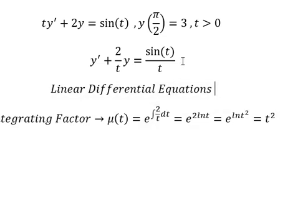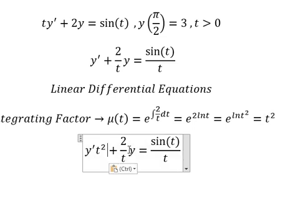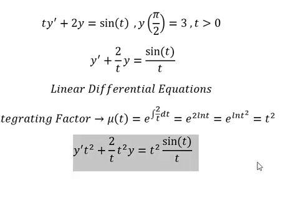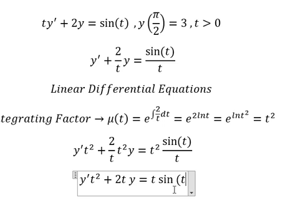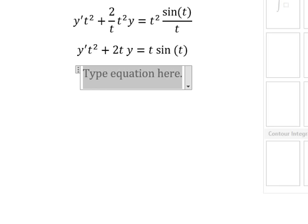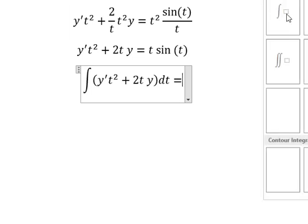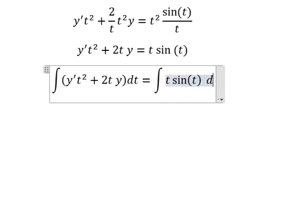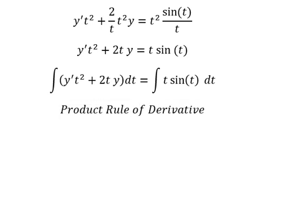Now we can simplify — that gives us T squared. So in this situation we multiply both sides by T squared. On this side we have 2T, and on this side we have T sine T. Next we put the integration on both sides.